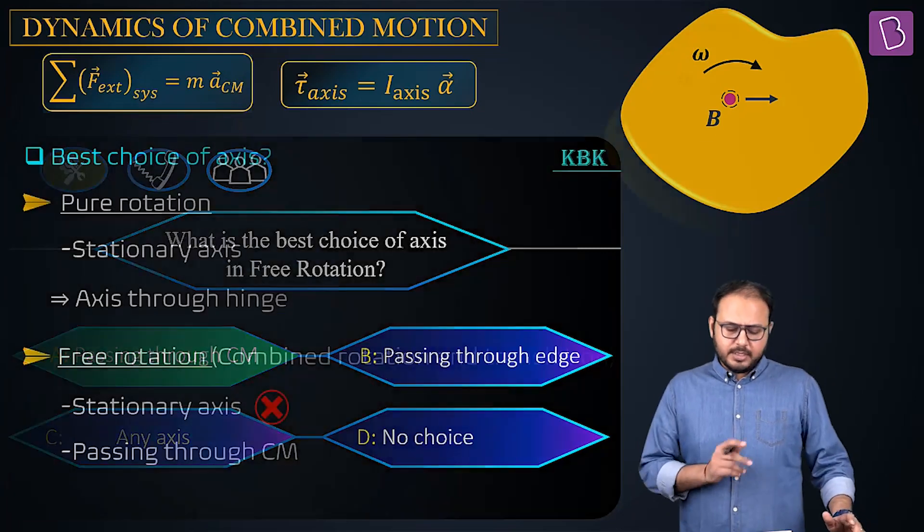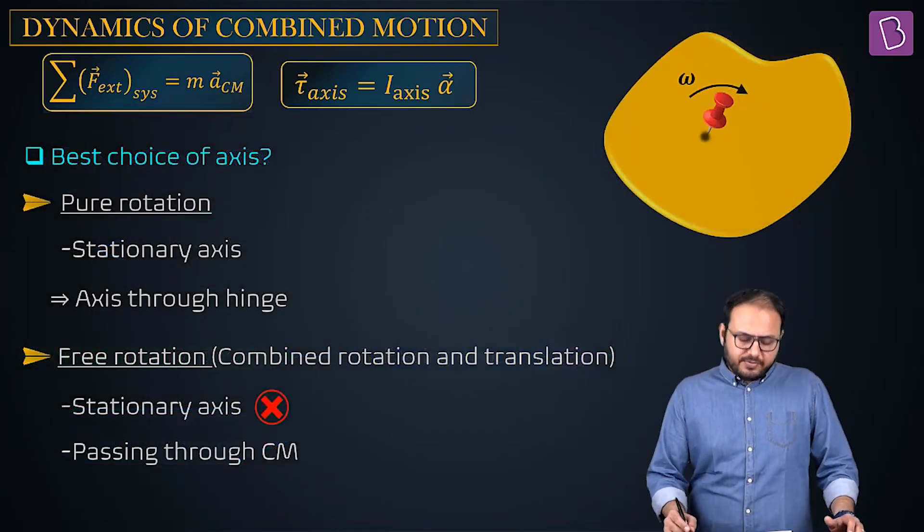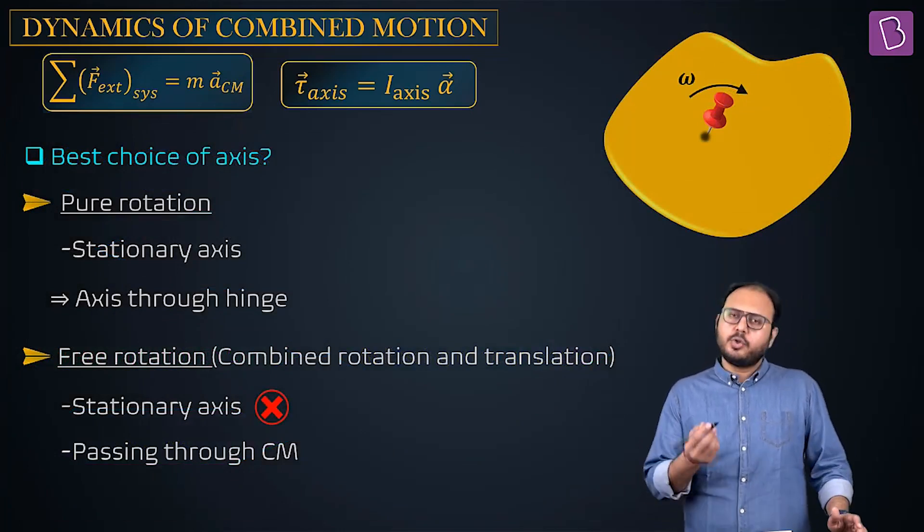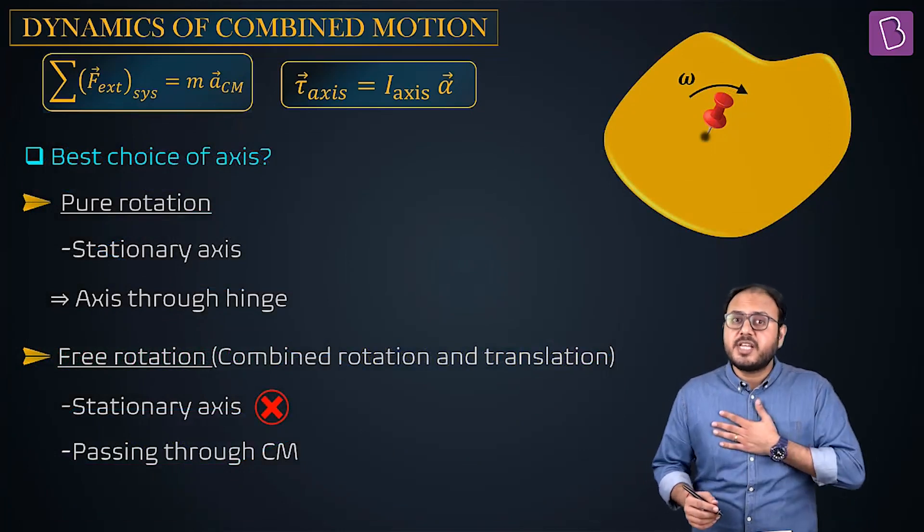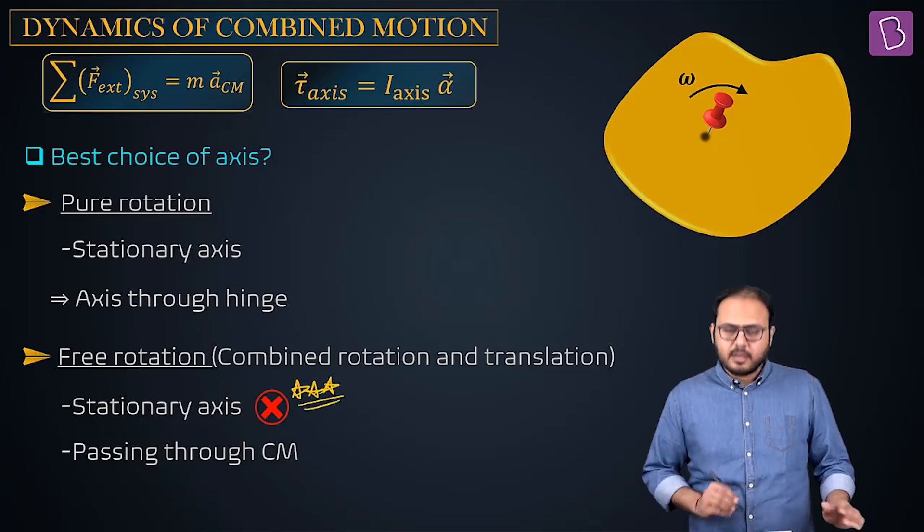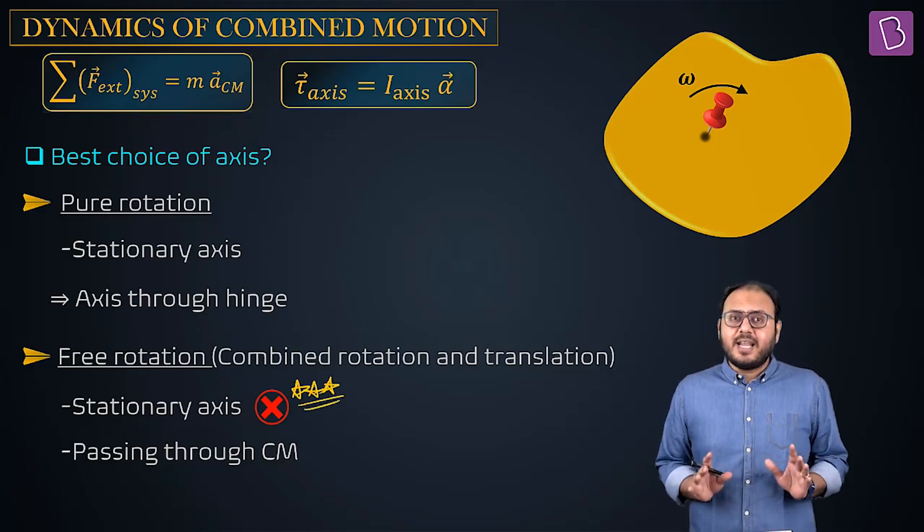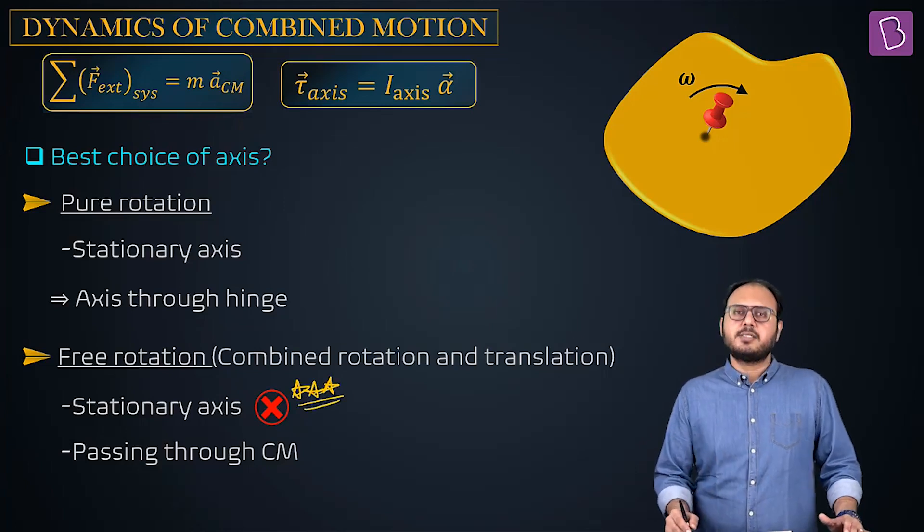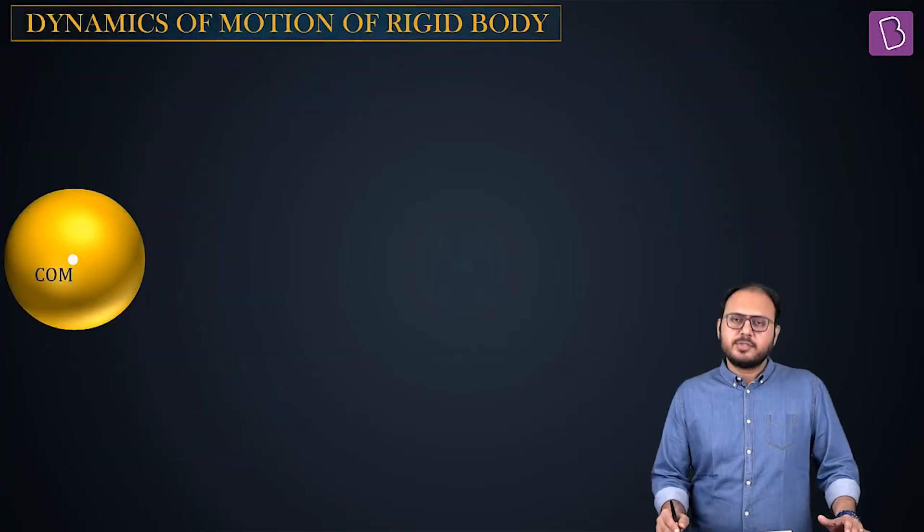Let me bring the boys home. So the best choice of axis was the game: for pure rotation, stationary axis, that is through hinge. For free rotation, I wish stationary axis, I will address this thing later. Stationary axis was right now, I can't see anything stationary. So what's the next best option? Center of mass.